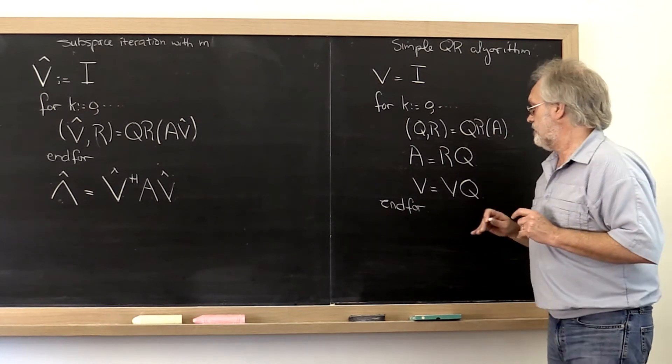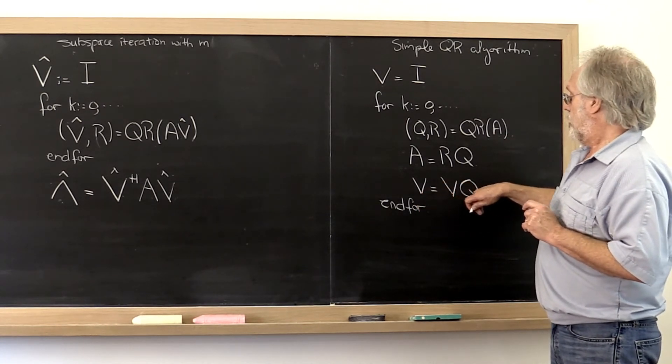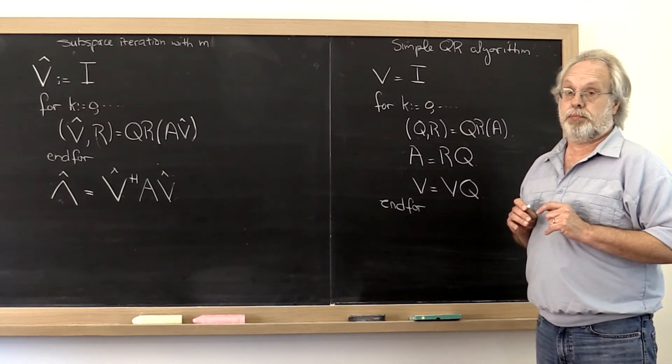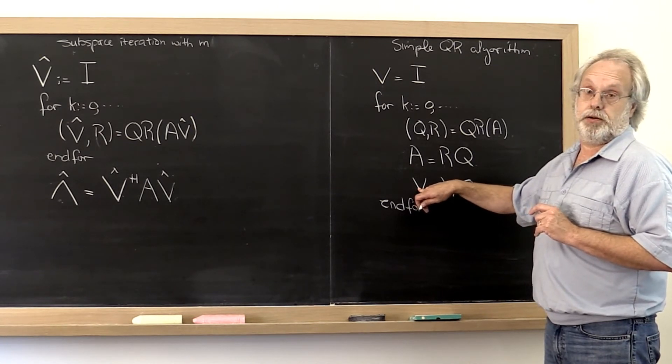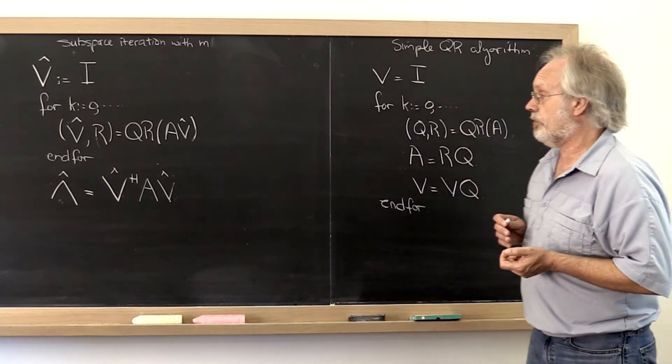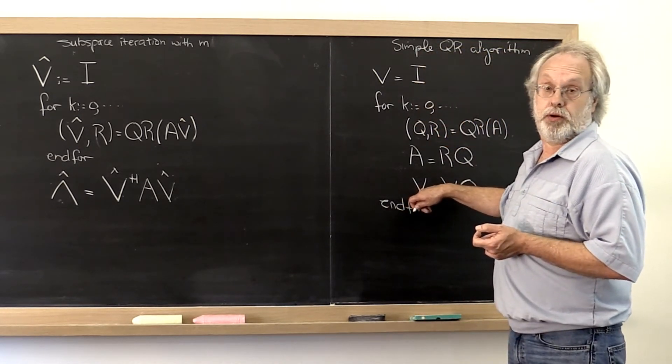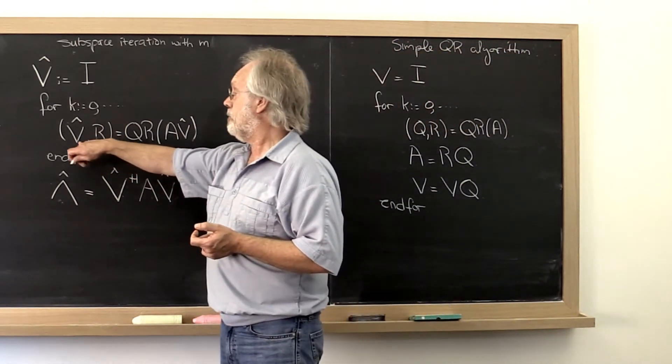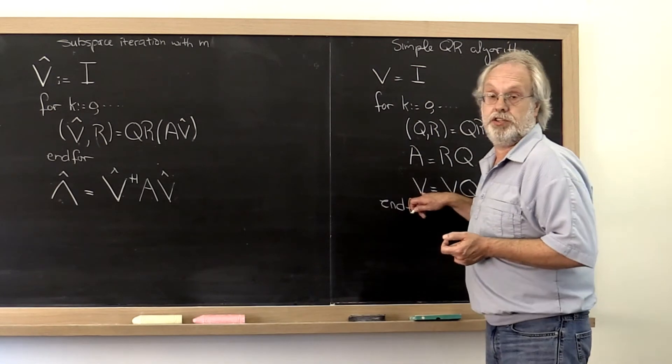Now a couple of observations. Notice that V here is really a whole bunch of unitary matrices multiplied together, so V itself is a unitary matrix. Now here is the most remarkable thing: this V that we compute right here is exactly the V hat that we compute right here. So this is really subspace iteration in disguise.